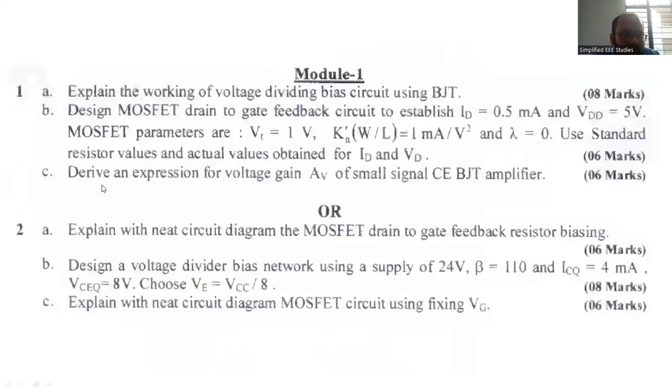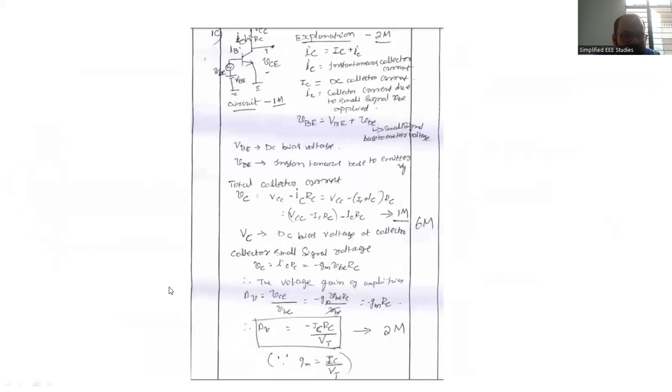Next question number 1C. Derive an expression for voltage gain of a small signal common emitter BJT amplifier. Standard derivation is available. You can refer to the textbook of Miller or any textbook. There is no need to worry. Here draw the common emitter configuration. Please draw the CE configuration which has weightage and try to mention the parameters which are required. Use this formula.